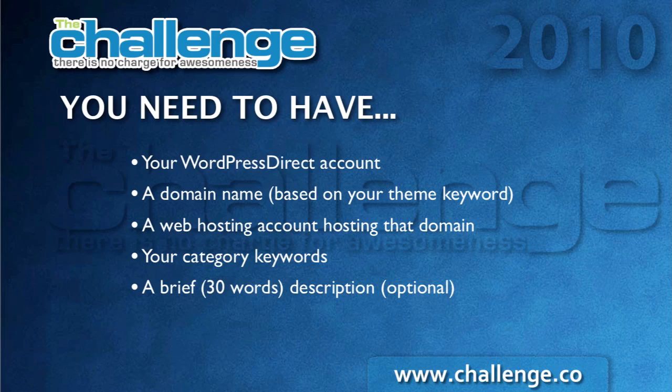Before you start your installation, you need to have a few things ready. First, you want to have your WordPress Direct account. On the first day of Module 2, I showed you how to sign up for a free WordPress Direct account that we're giving to all the challengers. So if you've done that, you should have your login email address and password. Next, you'll need a domain name - the one that you registered based on the theme keyword you chose and researched in Market Samurai. You'll need a web hosting account which is hosting that domain, meaning the name servers in the domain are pointing to that hosting account - Kenny Goodman should have covered that. You need your category keywords, the ones you've chosen to optimize your site around. And then you need a brief description - we suggest 20 to 30 words. This is optional; you can put it in later, but we suggest having everything together at the time of installation so you don't forget.